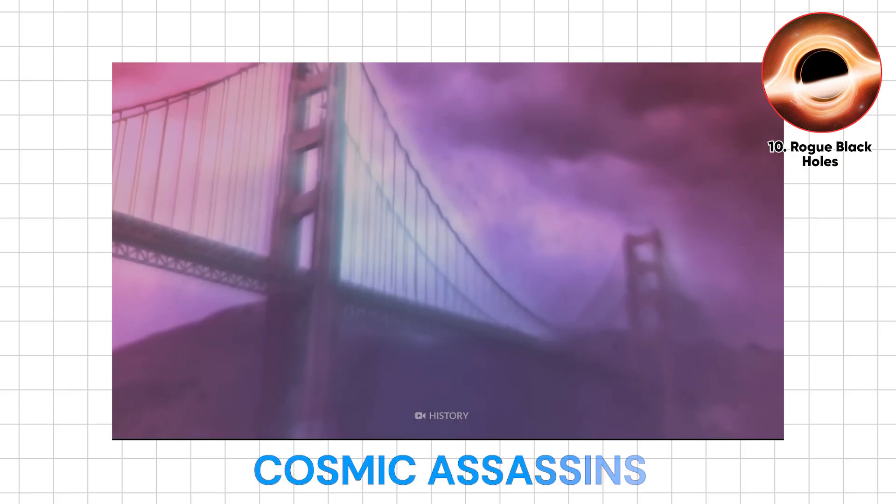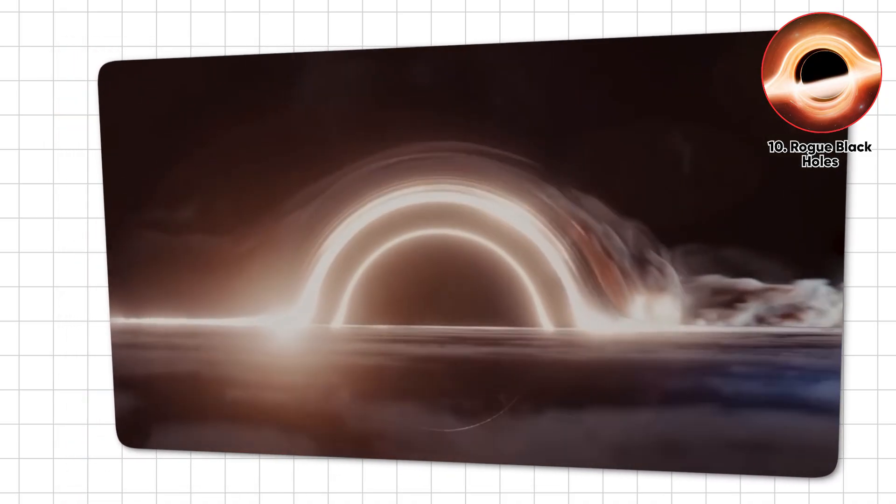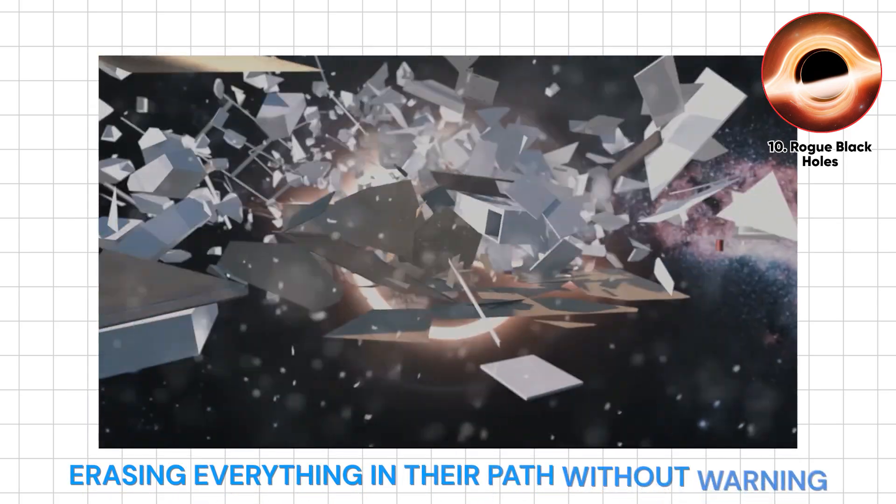Rogue black holes are cosmic assassins, untethered, invisible, and wandering the universe like silent predators, erasing everything in their path without warning.